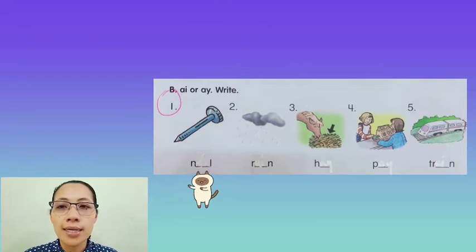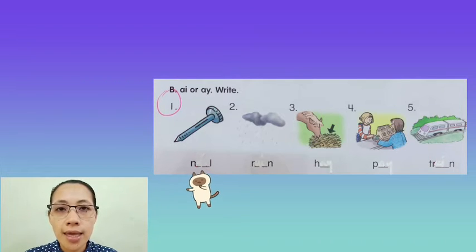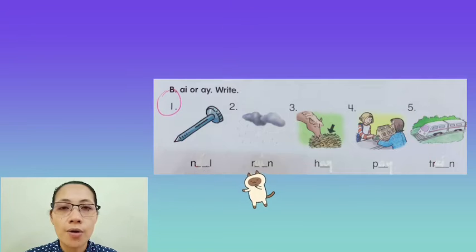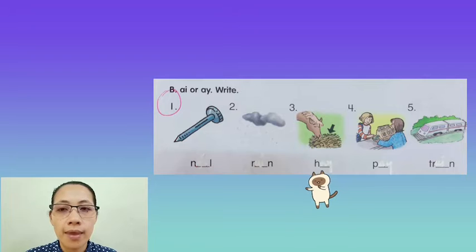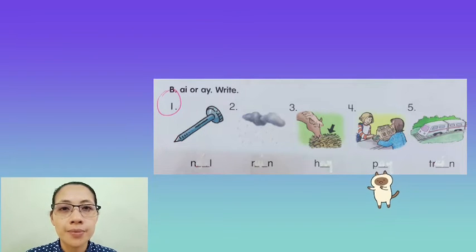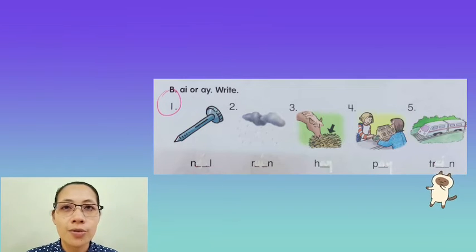Number 1, nail. Number 2, rain. Number 3, hay. Number 4, pay. And number 5, train.